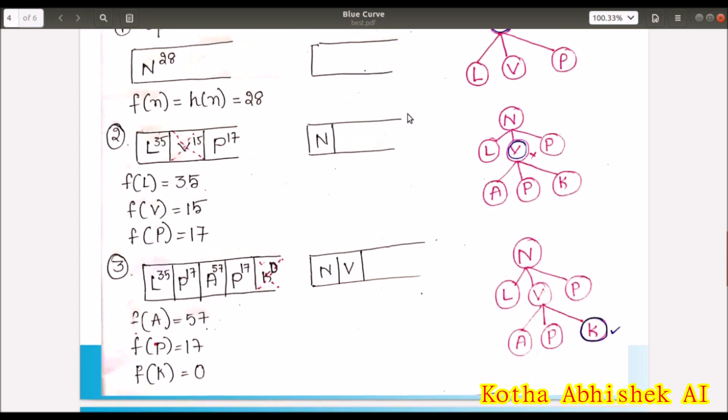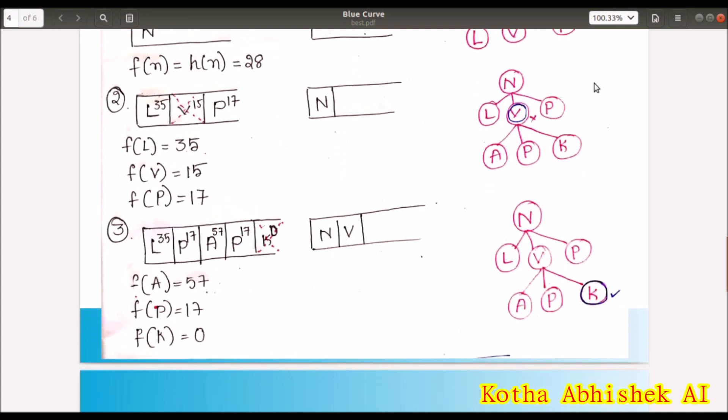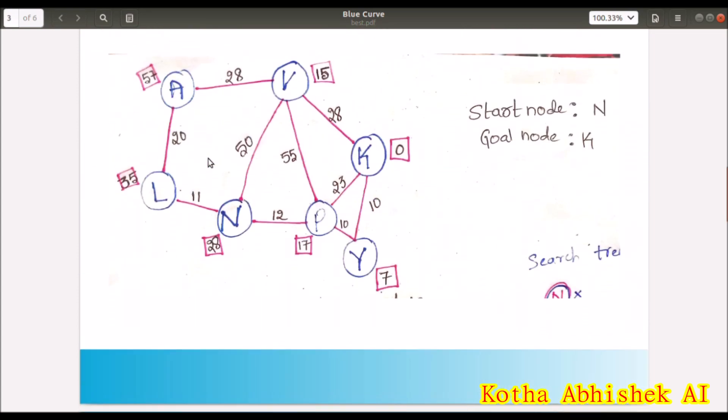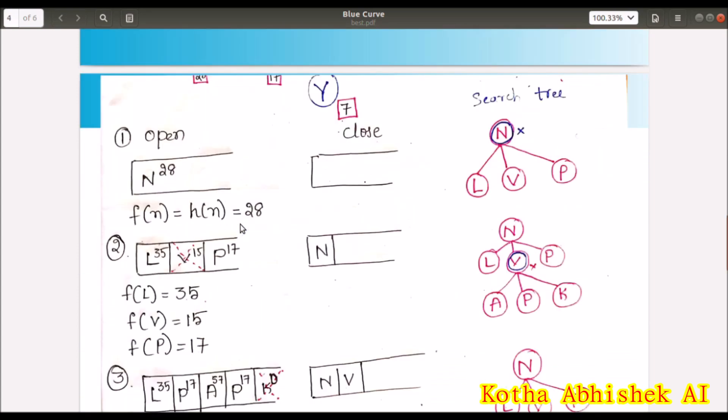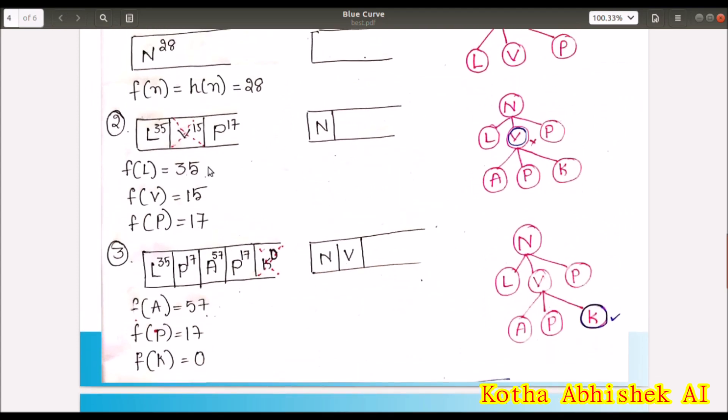Now we have three. Now we have the lowest heuristics. L have 35, V have 15, P have 17. So we want to do function f(L) equals to h(L). Whatever we have the heuristics. Now we have 35. Now we have the minimum among all these. That is V with 15. So we have the next process V. So next we will process V.